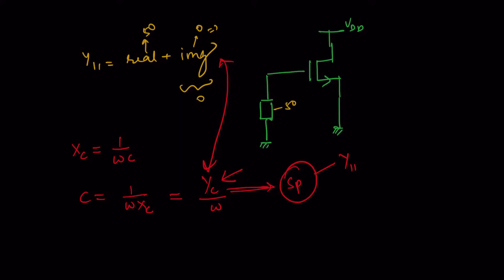And we already know omega, that is 2 pi F. F frequency we know because we are designing this circuit at some particular frequency. So YC is known from the SP analysis and this term is also known, so we will get the C value.